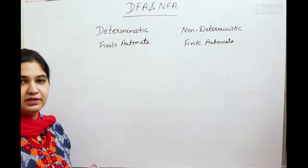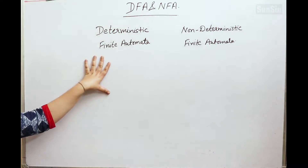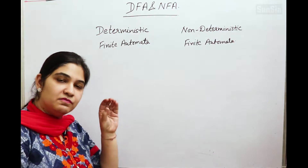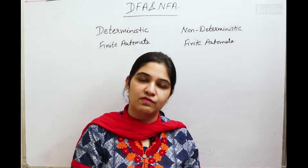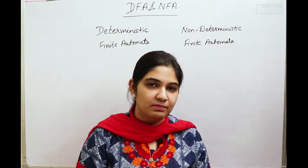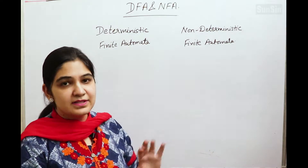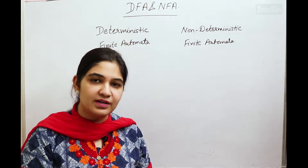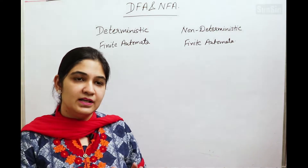Non-Deterministic Finite Automata means that the next state cannot be uniquely determined from a particular state with a particular input alphabet. In case of Deterministic Finite Automata, from one state with one input alphabet we have exactly one next state for all the given states and all the given input alphabets. Non-Deterministic Finite Automata means that from a particular state with a particular input alphabet we may have more than one next state.